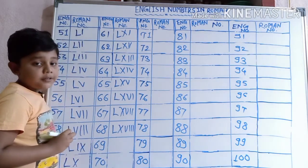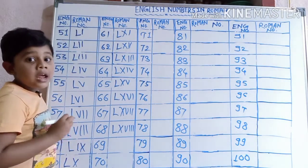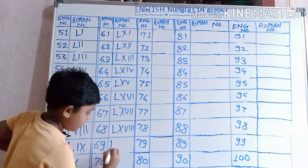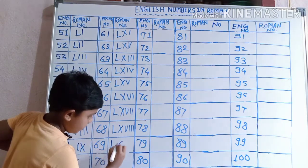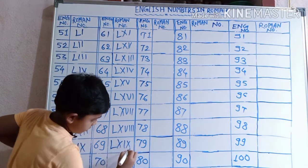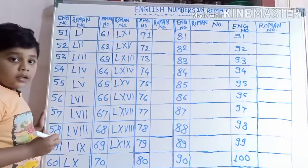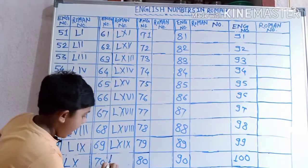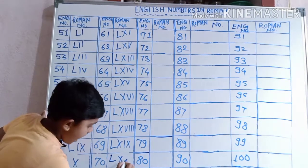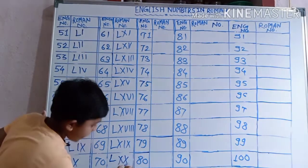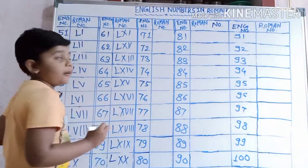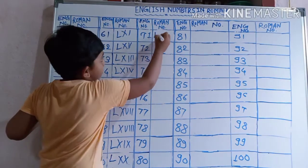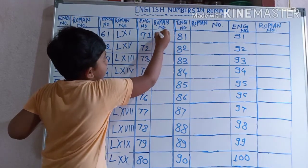69 ko: L, X, I, I, I. 70 ko: L, X, X, X. 71 ko: L, X, V, I, I, I.